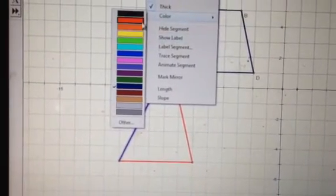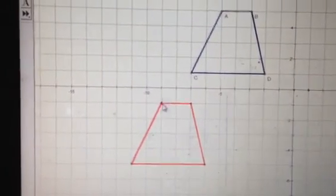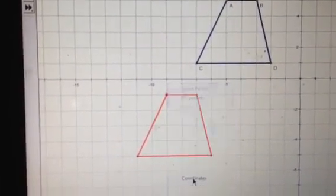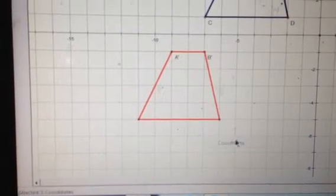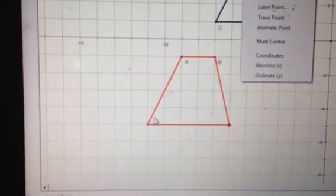And the next thing we're going to do is plot the new coordinates. Coordinates. So now you have A1 with a coordinate of negative 9, negative 1. B1.